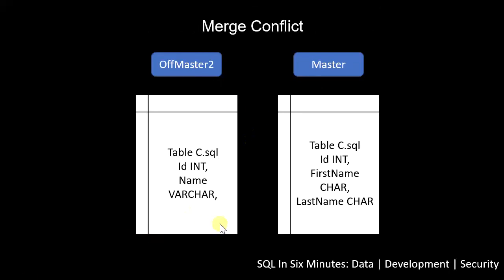It's the same thing here with the table C example. Let's say that master actually has it right — the edited file in master has a first name and last name character, and we don't actually want the name varchar. Then what that means is we're going to take the target. The source is the branch we brought off; we're moving it to the target in master. We're going to keep master's changes and not keep off master 2's changes. That's how this gets resolved.